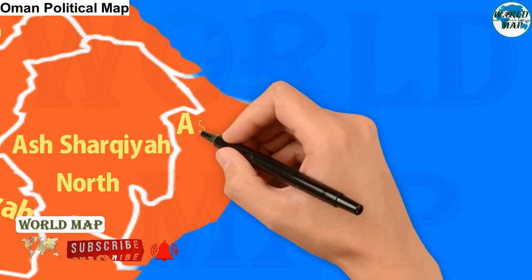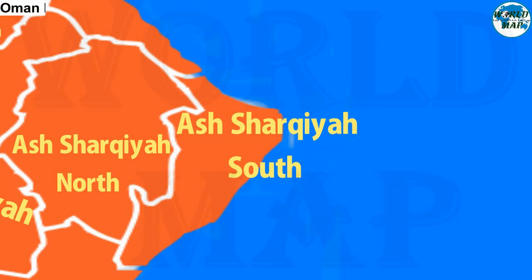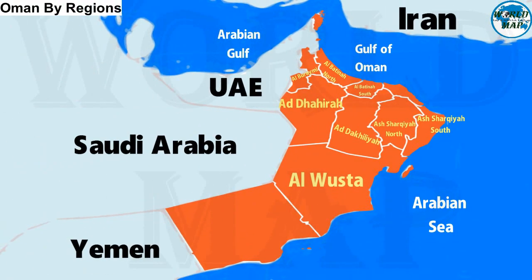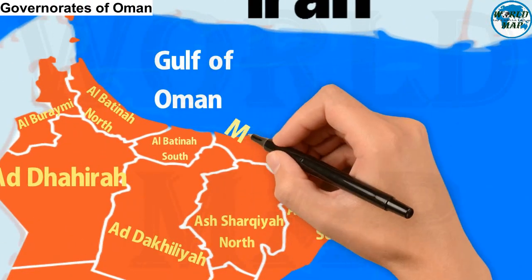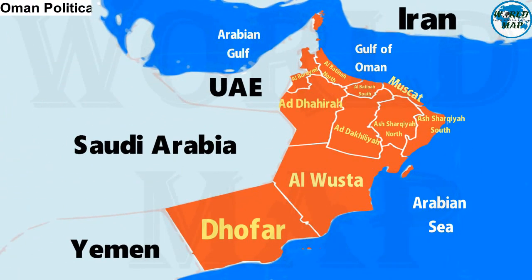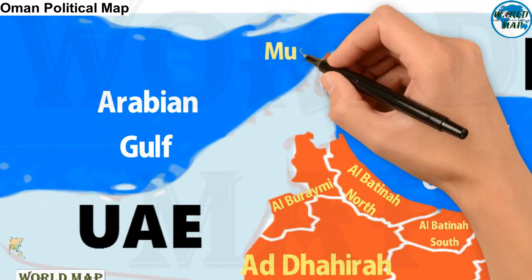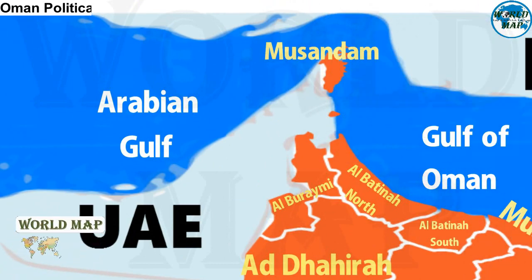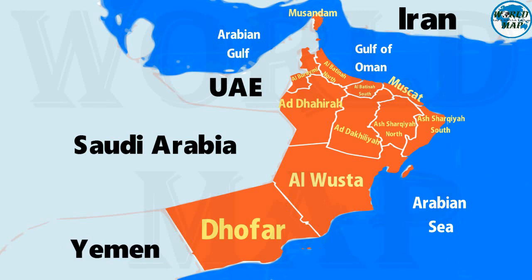Number 8: Ash-Sharkiyah South. Number 9: Dhofar. Number 10: Muscat. Number 11: Musandam.